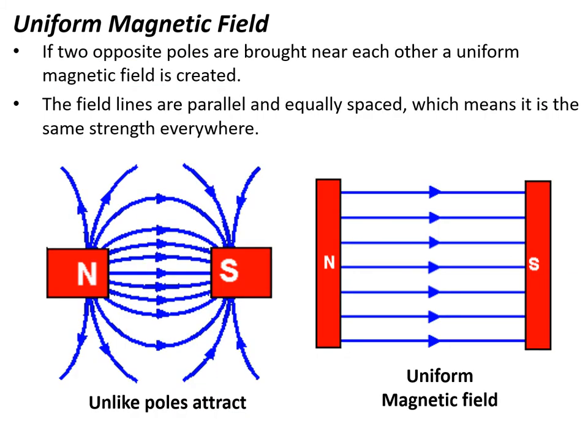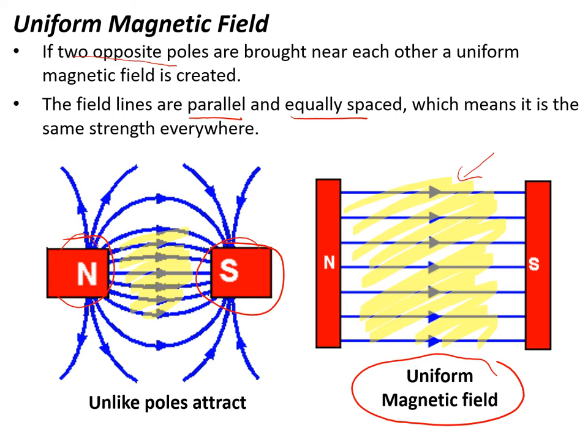We can create a uniform magnetic field. This is important for motors. We need a uniform magnetic field. If two opposite poles are brought near each other, a uniform magnetic field is created. If I bring north close to south, what we get in the centre here is a uniform magnetic field. If we make the north and the south poles a bit bigger, then we get this area. You can see that the field lines are parallel, equally spaced, and that means that it's the same magnetic force everywhere in that area. That's what we call a uniform magnetic field.